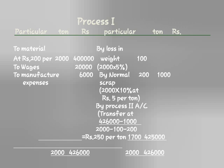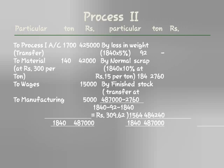Next is Process 2. Transfer from Process 1: 1,700 units at Rs. 4,25,000. Materials: 300 per unit into 140 units equals Rs. 42,000. Wages: Rs. 10,000. Manufacturing expenses: Rs. 5,000.